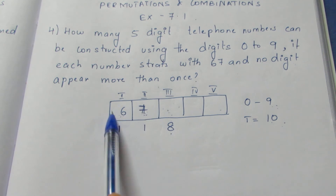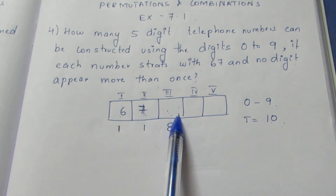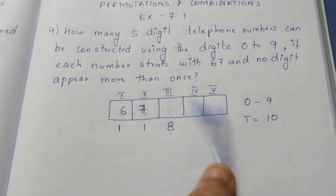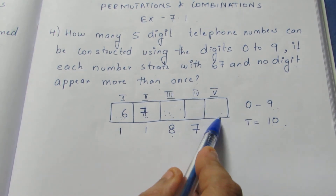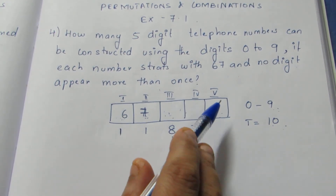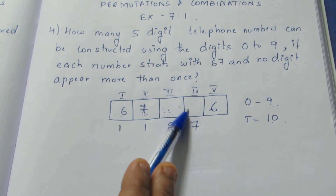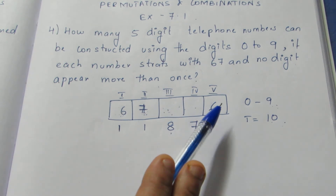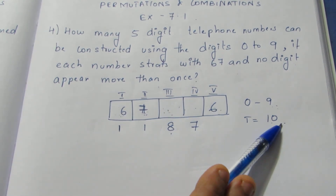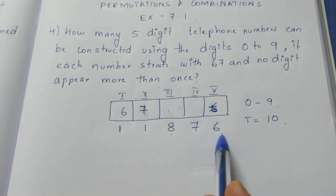If the third box is filled with, say, 5, we can't use those three numbers for the fourth box. Leaving those three numbers, we can fill the fourth box with 7 numbers — any number except those three already used. The same way for the fifth box: leaving the four numbers already used, we can fill the fifth box with 6 numbers, since we can't repeat any of the four numbers already written.